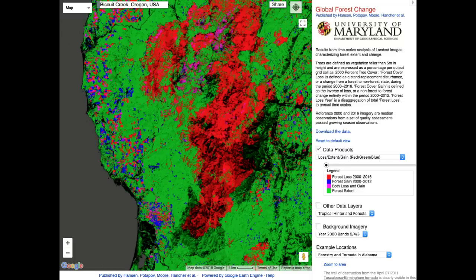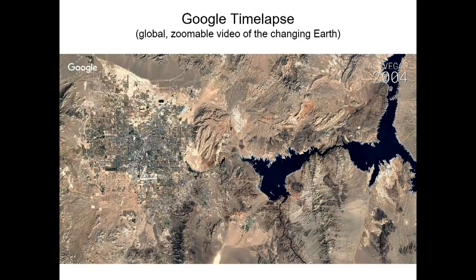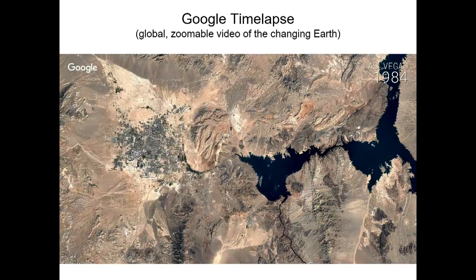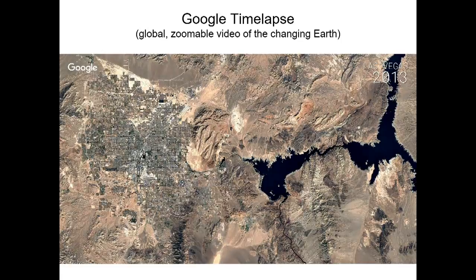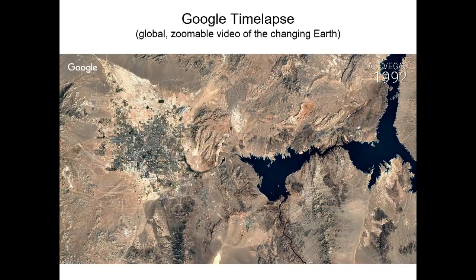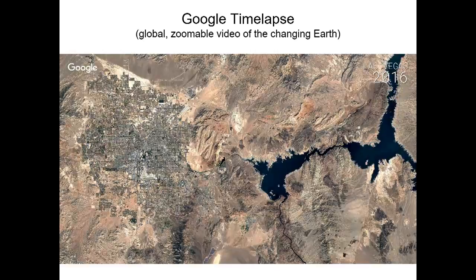We also build visualizations for the general public — this is called Google Timelapse. I'm showing an area of Las Vegas showing the growth from about 1984 to present, and the fluctuations in Lake Powell. This type of awareness is really incredible for just building awareness of changes happening. It's embeddable on websites. It's available throughout the entire world based on the Landsat record and other satellites.